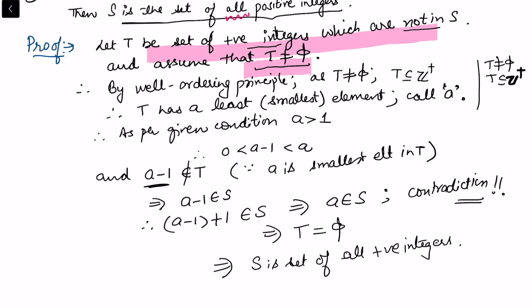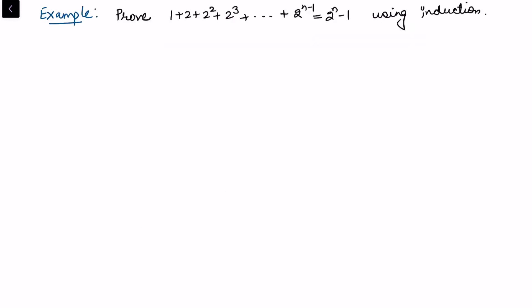In fact, in some literature the two statements — Finite Induction and the Well-Ordering Principle — are said to be equivalent. Now let's take an example. Prove that 1 plus 2 plus 2 squared plus 2 cubed plus up to 2 to the power n minus one equals 2 to the power n minus one, using mathematical induction.